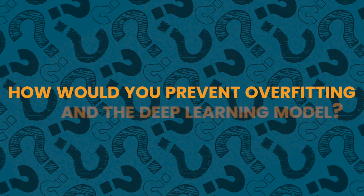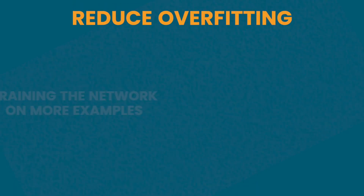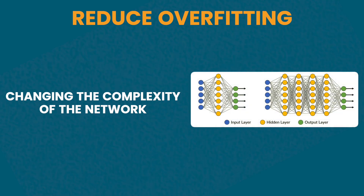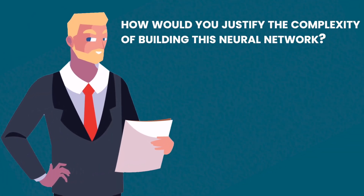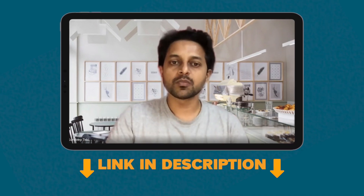Another question in this domain might be: how would you prevent overfitting in a deep learning model? This assumes you know what a deep learning model is and tests nuances — for example, you can reduce overfitting by training on more examples or reducing the complexity of the network. A very common question is also around explaining technical concepts to a non-technical audience, such as justifying to your manager the complexity of building a neural network, considering the costs involved.